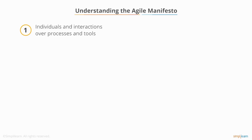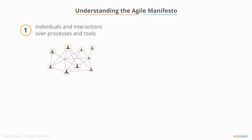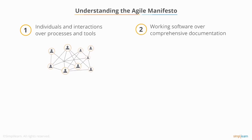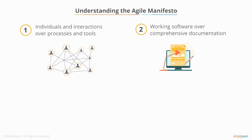Let's take a look at the four main points in the manifesto. One: individuals and interactions over processes and tools. While processes and tools are necessary, the emphasis is on individuals and the interactions between them. Two: working software over comprehensive documentation. Documentation does not demonstrate progress or value, therefore the emphasis is on working software.